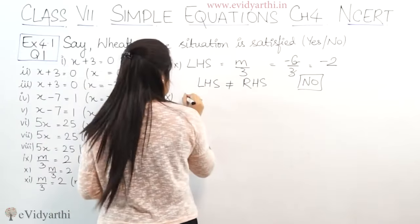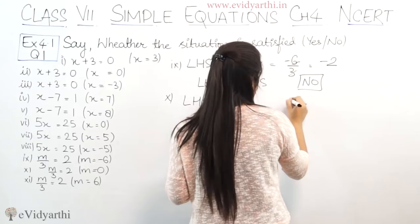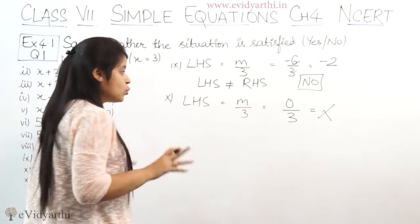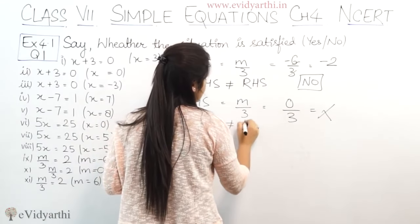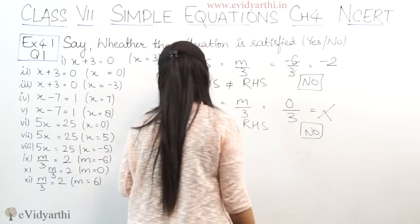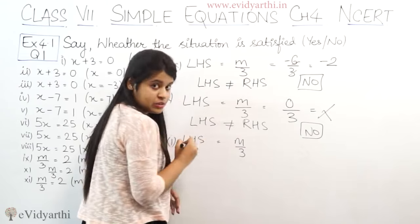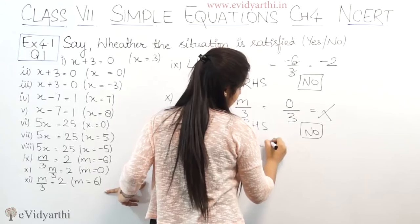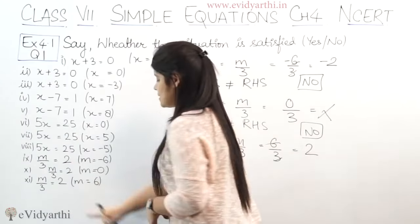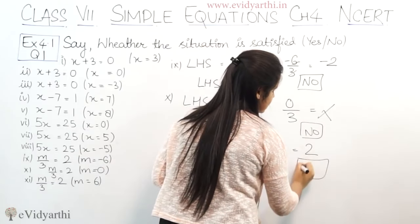In the 10th part, same equation m upon 3 equals to 2. M value given is 0. If I write 0 upon 3, the answer will be 0 — not 2. So LHS is not equal to RHS and the answer is no. In the 11th part, again m upon 3 equals to 2. M value given is 6. So 6 upon 3 — the 6 and 3 cancel — giving 2. RHS is also 2, so LHS equals RHS and the answer is yes.